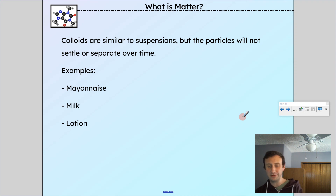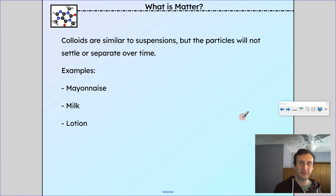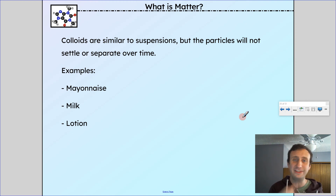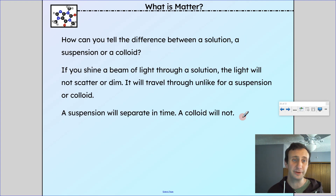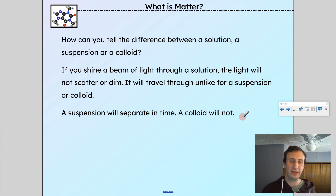Colloids and suspensions are both types of heterogeneous mixtures. Suspensions will actually separate over time — if you wait, the particles will settle to the bottom. Colloids do not separate over time; they remain mixed. Examples of colloids: mayonnaise, milk, lotion. Milk is actually a colloid, not a homogeneous mixture — you can see protein and fat globules, and light scatters through it. If you shine a beam of light through a solution it won't scatter, unlike for a suspension or colloid. A suspension separates in time; a colloid does not.